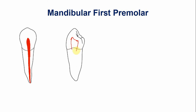The pulp cavity gradually tapers. The apical foramen opens either in a lingual or in a buccal direction. Overall, the dimensions of the pulp canal and the pulp chamber are greater in the buccal-lingual direction compared to the mesiodistal direction.